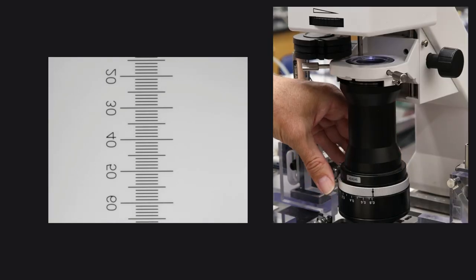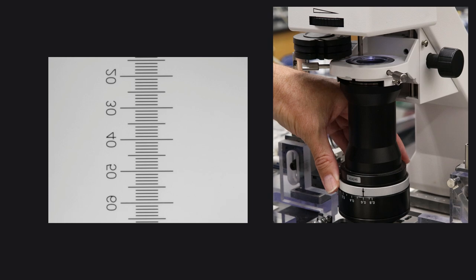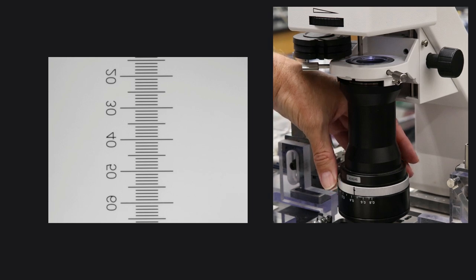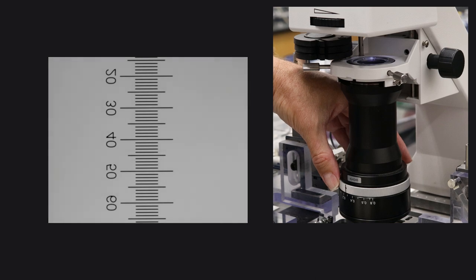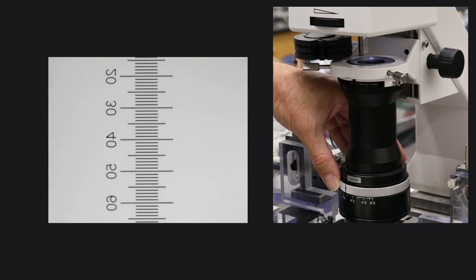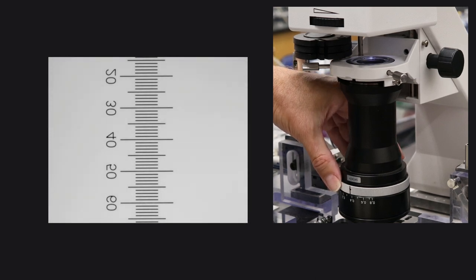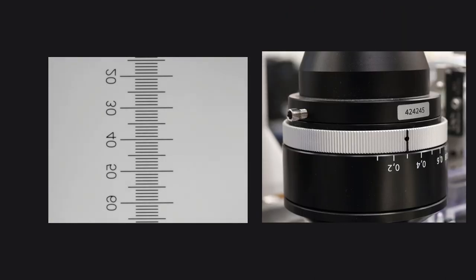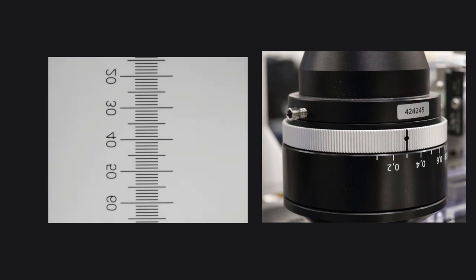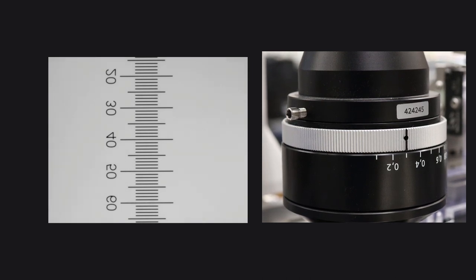Finally, let's find the correct setting for the condenser aperture. I first open it all the way and then gradually close it while observing the overall brightness of the image. The optimal aperture is the one where the image just starts getting darker. At this point, the adjustable numerical aperture of the condenser more or less matches the NA of the objective. And this concludes our setup of Köhler illumination.